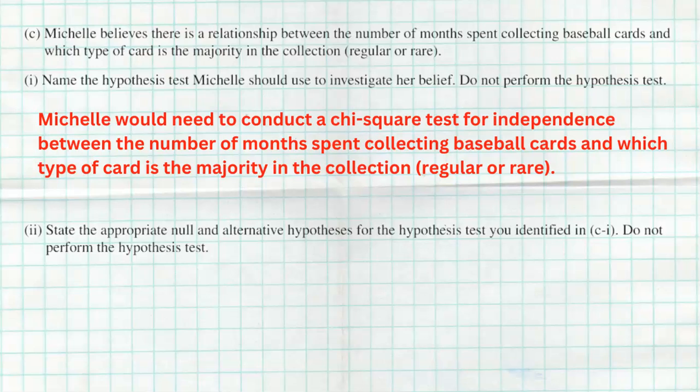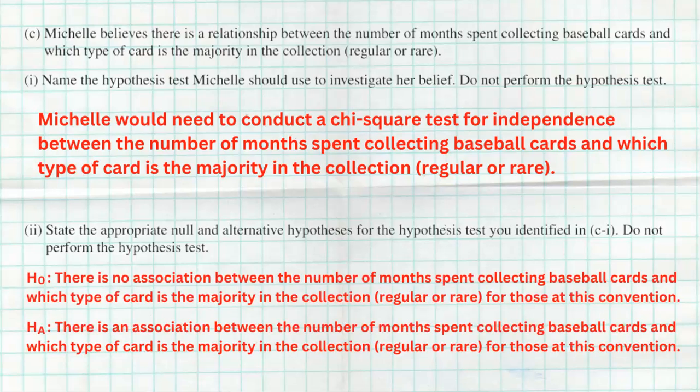The hypotheses are quite simple. The null hypothesis is that there is no association — you could also say independence — between the number of months spent collecting baseball cards and which type of card is the majority in the collection, regular or rare, for those at this convention. The alternative is what she's wondering: that there is an association between the number of months spent collecting baseball cards and which type of card is the majority in the collection, regular or rare, for those at the convention.